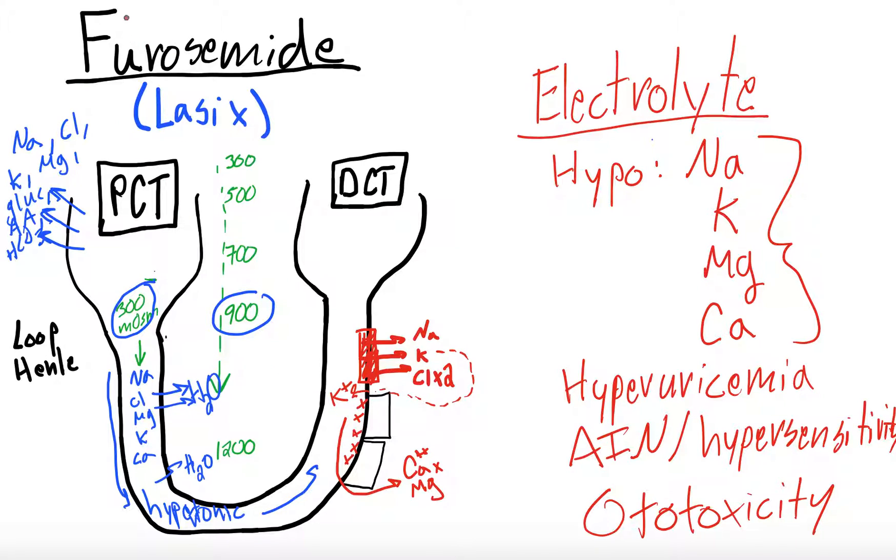So, when furosemide comes in and inhibits this, what it is doing is decreasing the amount of osms that can be in the interstitium, right? Because all of these salts here, even though it doesn't show them going over here, they're all over here as well, causing this gradient of osms. So, without the sodium-potassium chloride, calcium, magnesium, there is going to be lower osms in the interstitium, which then means there's going to be a smaller gradient for water, H2O, to follow. So, what that means is that the tubules are retaining more water, this is less hypertonic, and what you're delivering to the distal convoluted tubule has significantly more water in it.